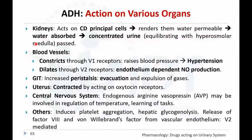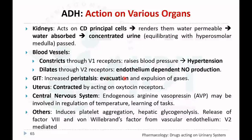Anti-diuretic hormone acts on blood vessels and causes vasoconstriction through V1 receptors, raising blood pressure and leading to hypertension. Through V2 receptors, it causes vasodilation by producing endothelial-dependent nitric oxide, which acts as a smooth muscle relaxant.